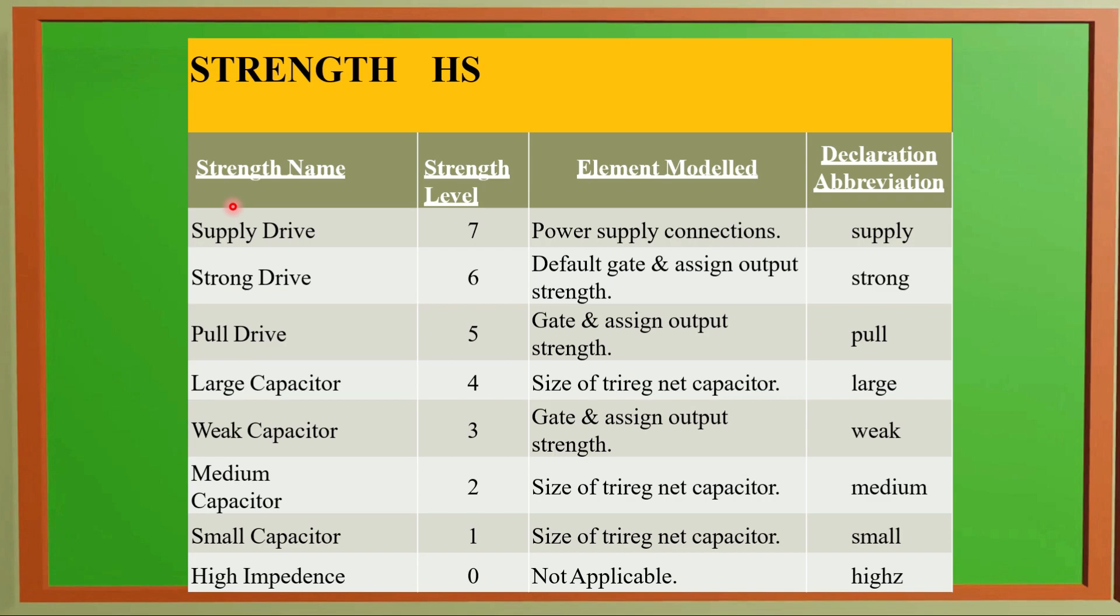There will be strengths and we use various kinds of objects and drives in our system. We may have virtual capacitors, supplies, and we need to pull up and pull down the designs. So there will be strength levels. Strength name and strength levels can be defined in a programming language.